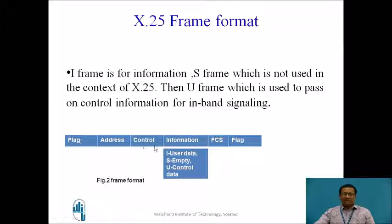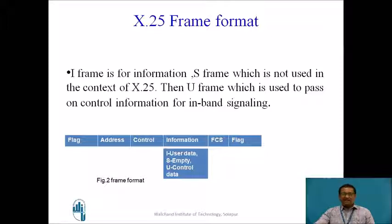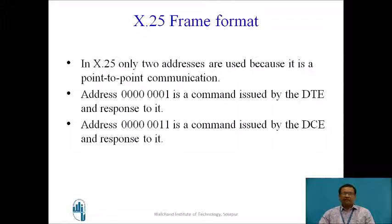Then some control information is added to perform flow and error control of the frames. In the information field, i stands for user data, s is empty in case of X.25, and u for control data. The control data is necessary for controlling flow of information, which is used in in-band signaling. There are only two addresses in X.25 because it is a point-to-point communication.